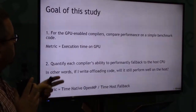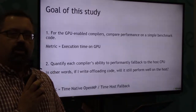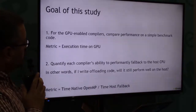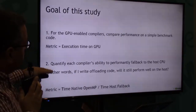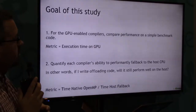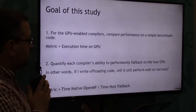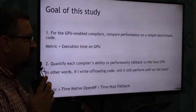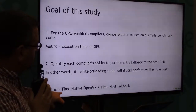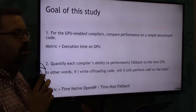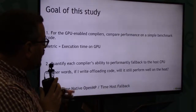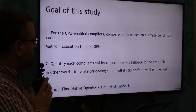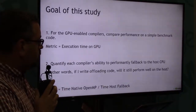The goal of this study is first to look at how portable we are between different compilers on the same platform, and our metric there will be just the raw execution time. But also to quantify the compiler's ability to be portable back to a multi-core CPU — in other words, if I write GPU code, how well can I expect it to run on the CPU as well? For that metric, I've taken what I would call native OpenMP, which is traditional OMP Parallel for, and compared it to a few different methods of writing the code for a GPU, forcing that to fall back to the host.